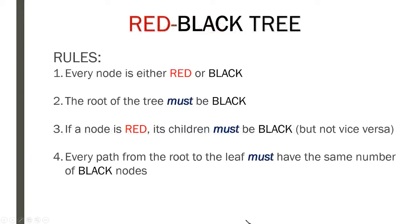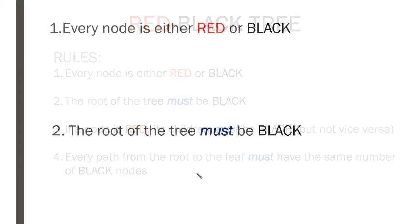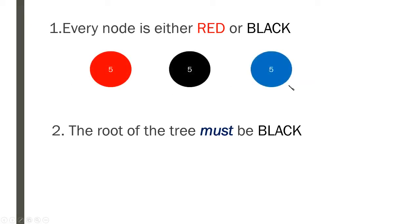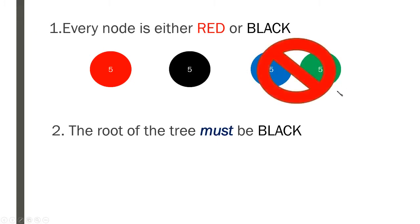If you don't remember all the rules yet, don't worry, because I'm going to go over them one by one. The first and second rules are pretty straightforward. The first rule states that every node is either red or black — easy enough. It just means every node in the red-black tree is either red or black. It can't be blue or green.